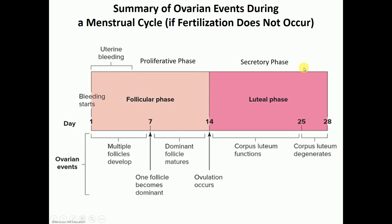This is what a menstrual cycle looks like. It's a generic way of explaining how things work. A whole cycle starts from day one, which is the first day of bleeding, all the way through 28 days. Mid-cycle, at day 14, ovulation occurs. The pre-ovulation phase is named the follicular phase because the Graafian follicle is mainly making estrogen, while after ovulation the corpus luteum is mainly making progesterone — this is the luteal phase. These are the names of the phases in the ovaries.